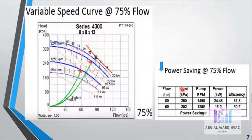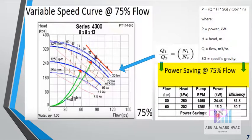If we reduce the flow up to 75%, from 80 to 60 for example, we will reduce the head and pump RPM. Thus we can use the pump power according to the formula, which will have power savings of 38.7%.